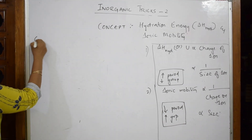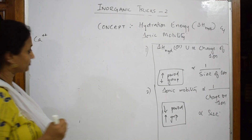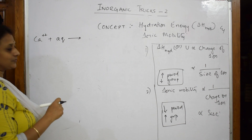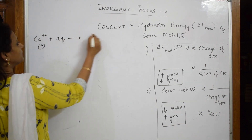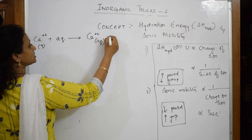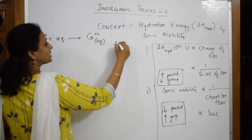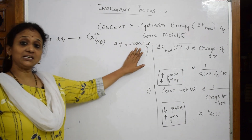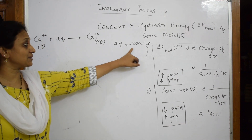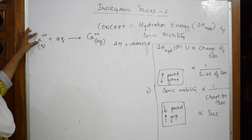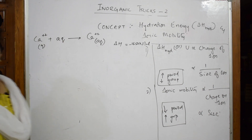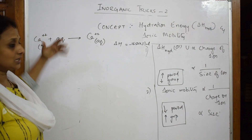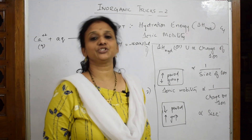Let's see what hydration enthalpy is. Suppose I have a cation in an aqueous medium. When a gaseous ion and water combine together — for example, Ca²⁺ in aqueous solution — there is a certain delta H value, which is minus 1650 kilojoules per mole. The hydration enthalpy is the energy released when new bonds are formed between an ion and water molecules. The bond formed between an ion and water is called hydration enthalpy.